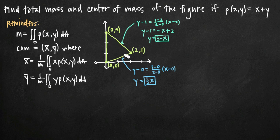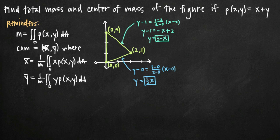One thing you need to do before finding mass is find the equations of the lines connecting the coordinate points (0,3) and (2,1), and (0,0) and (2,1). I've gone ahead and done that using the point-slope form. I found that the equation of one line is y equals 3 minus x, and the equation of the other line is y equals one-half x. We're going to use those as upper and lower limits in our double integral.